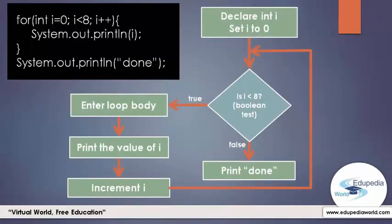Let's take a simple example. Here we have a for loop, and inside the loop body there is a print statement. There is also a print statement outside of the for loop. Using a flow diagram, we present what's happening in this code segment.